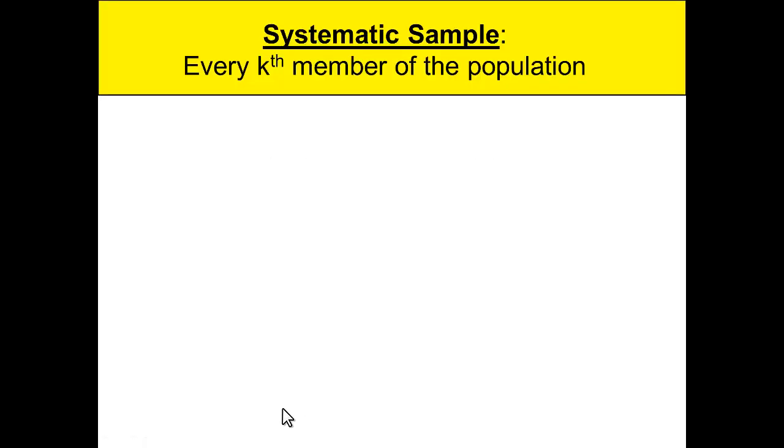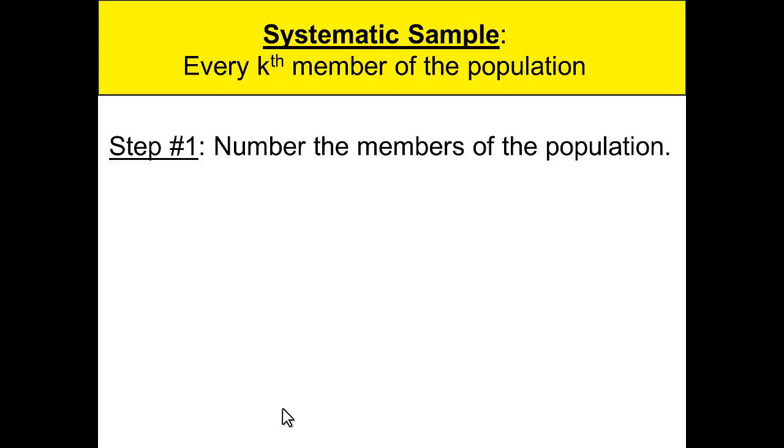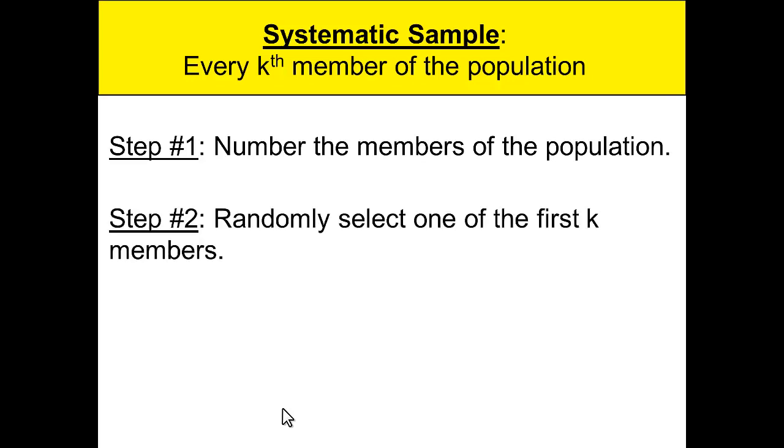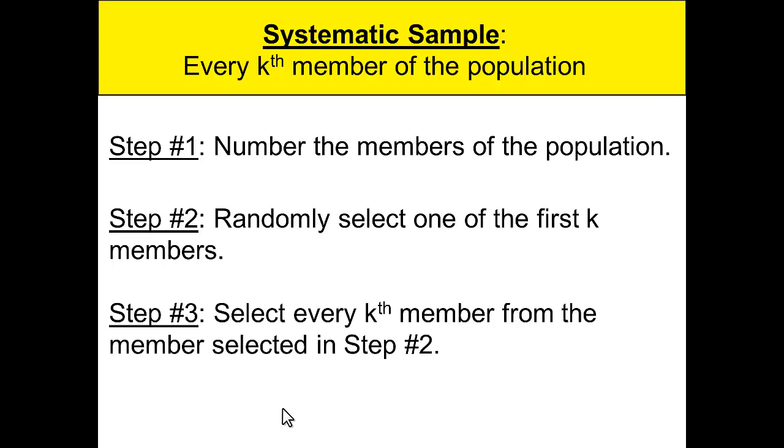Let's look at the process for picking a systematic sample. Systematic example: every kth person or member of the population. Number the members of the population is the first step. The second step: randomly select one of the first k members. Third step: select every kth member from the member selected in step number two.